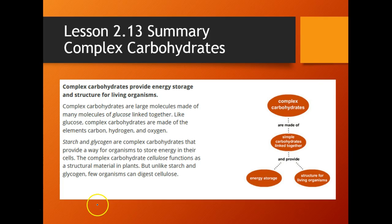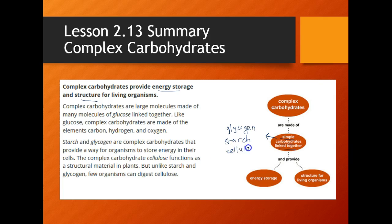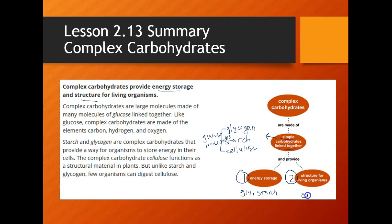Here's an overall summary of what we went over today. Complex carbohydrates provide energy storage and structure for living organisms. They are made up of simple carbohydrates linked together. The three examples of complex carbohydrates we covered were glycogen, starch, and cellulose — all made up of many glucose molecules. The two functions are energy storage and structure: glycogen and starch are mainly energy storage, while cellulose is mainly used for structure in living organisms.